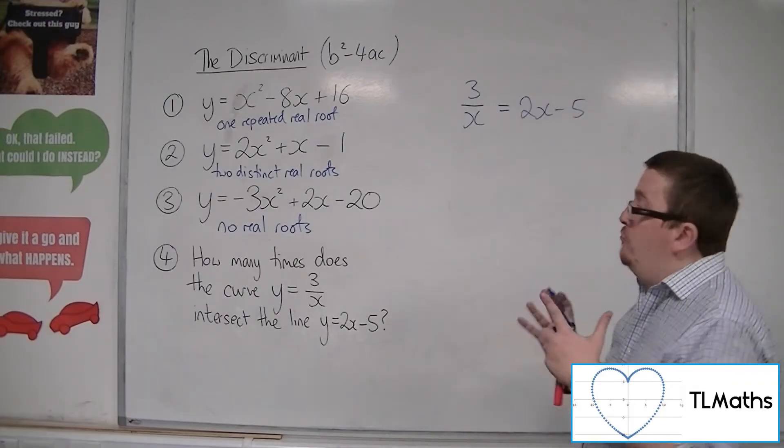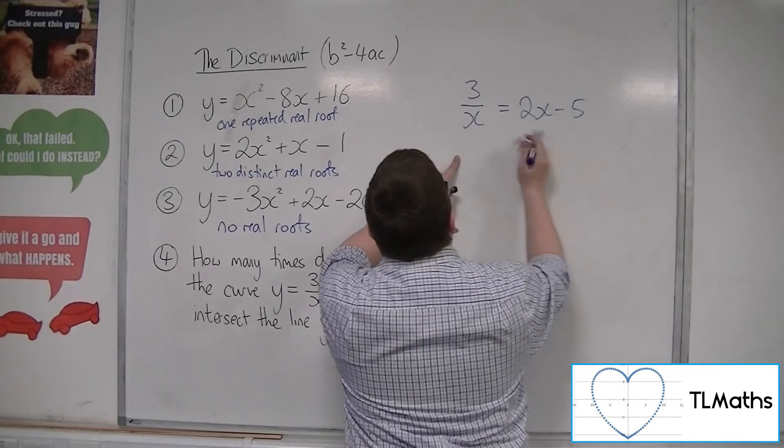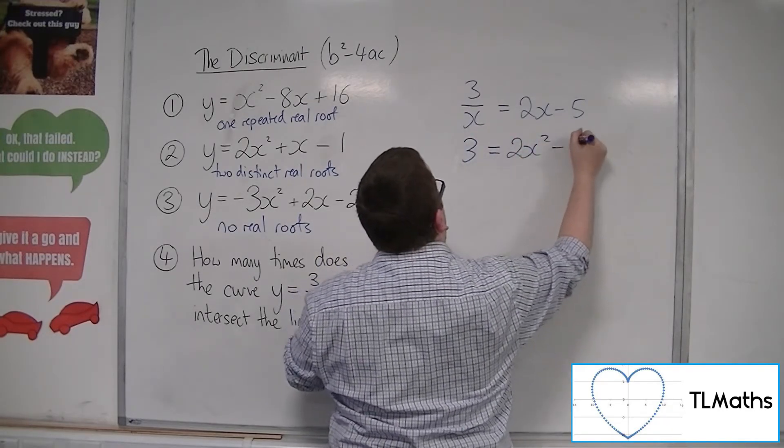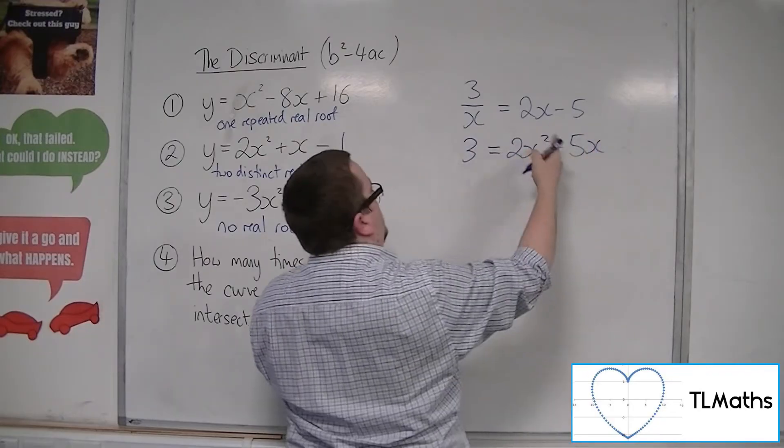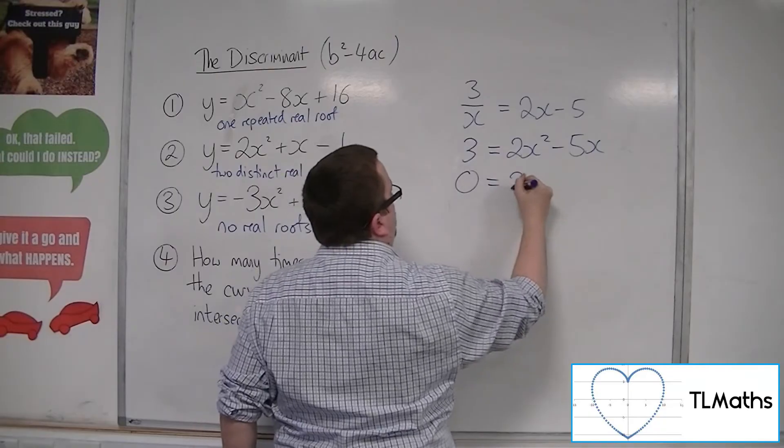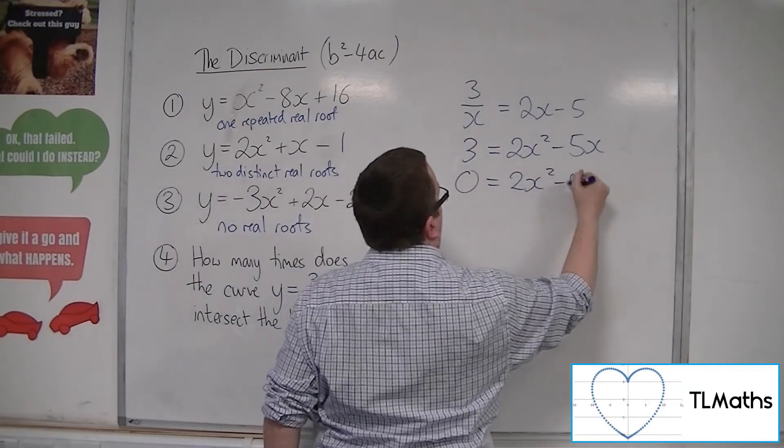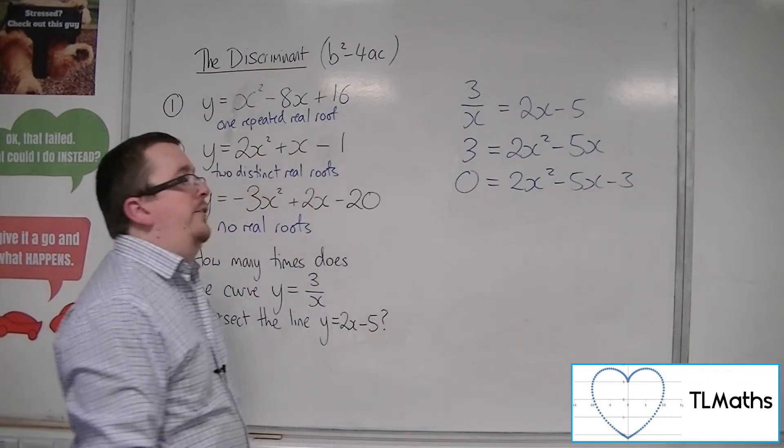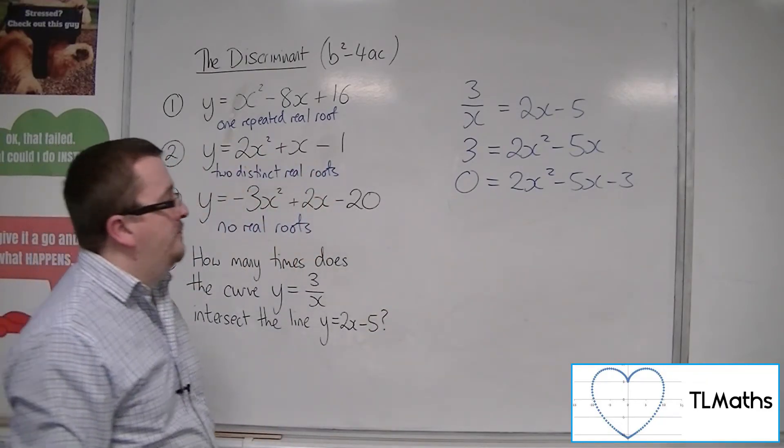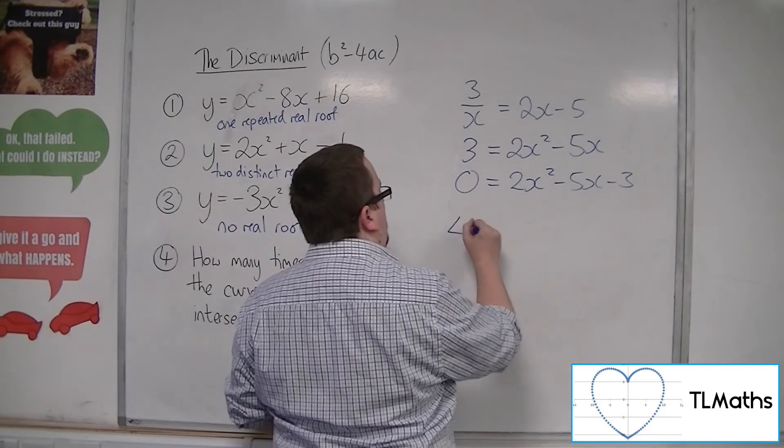Now what I can do is I can rearrange this. So I can multiply both sides by x. So I multiply the x by the 2x and the x by the minus 5. Subtract the 3 from both sides. And so what I'm actually asking myself is how many solutions does this quadratic have? So I can use the discriminant.